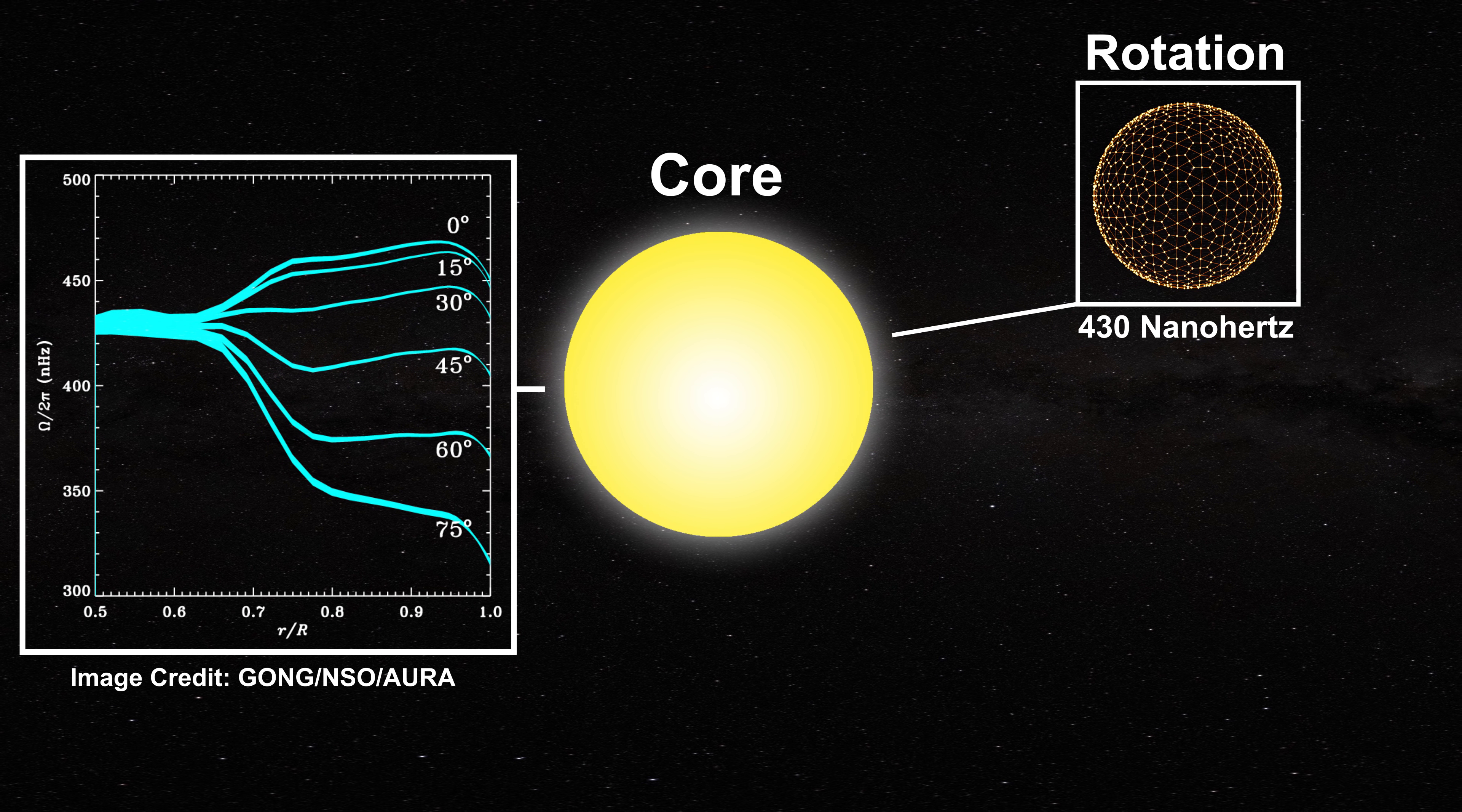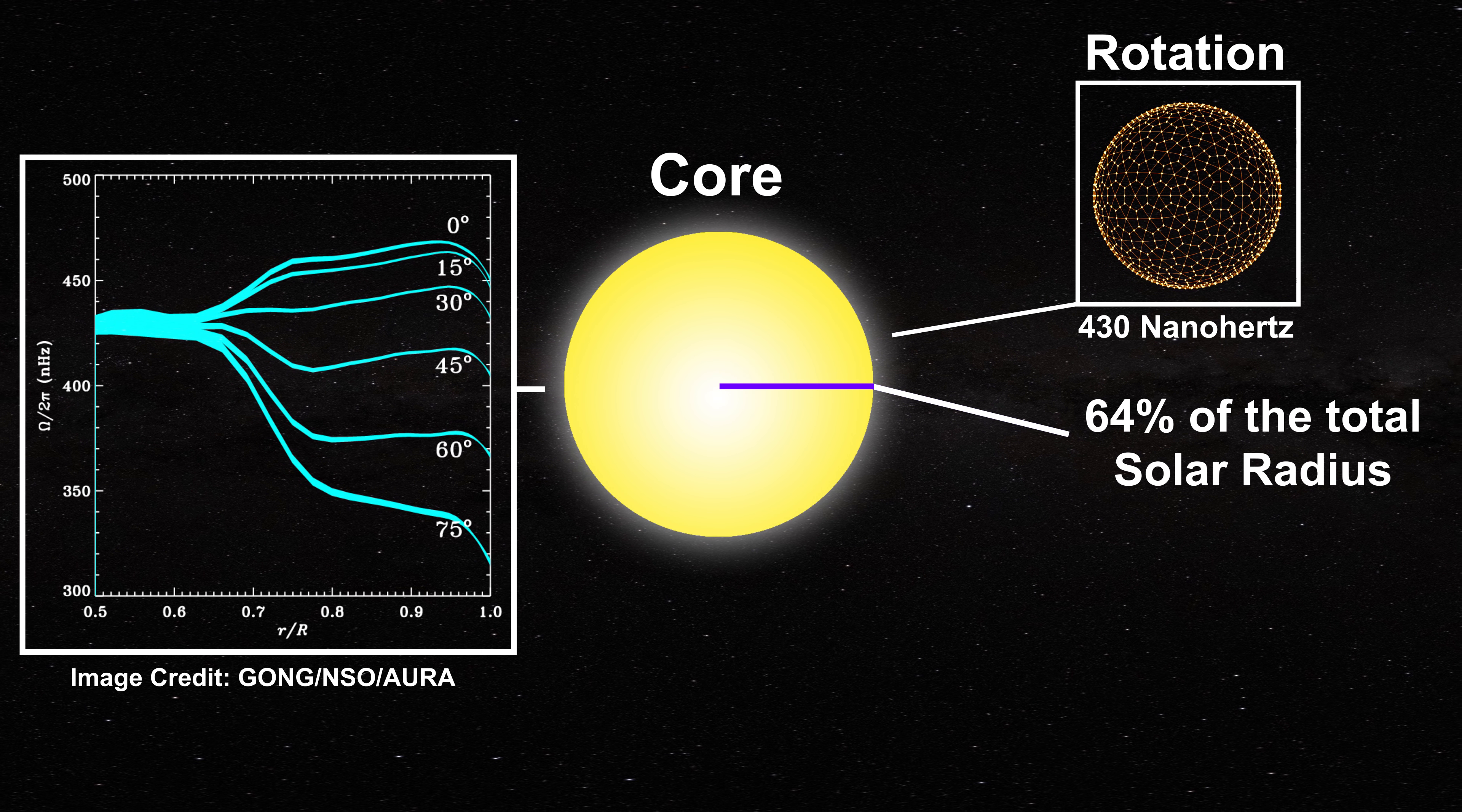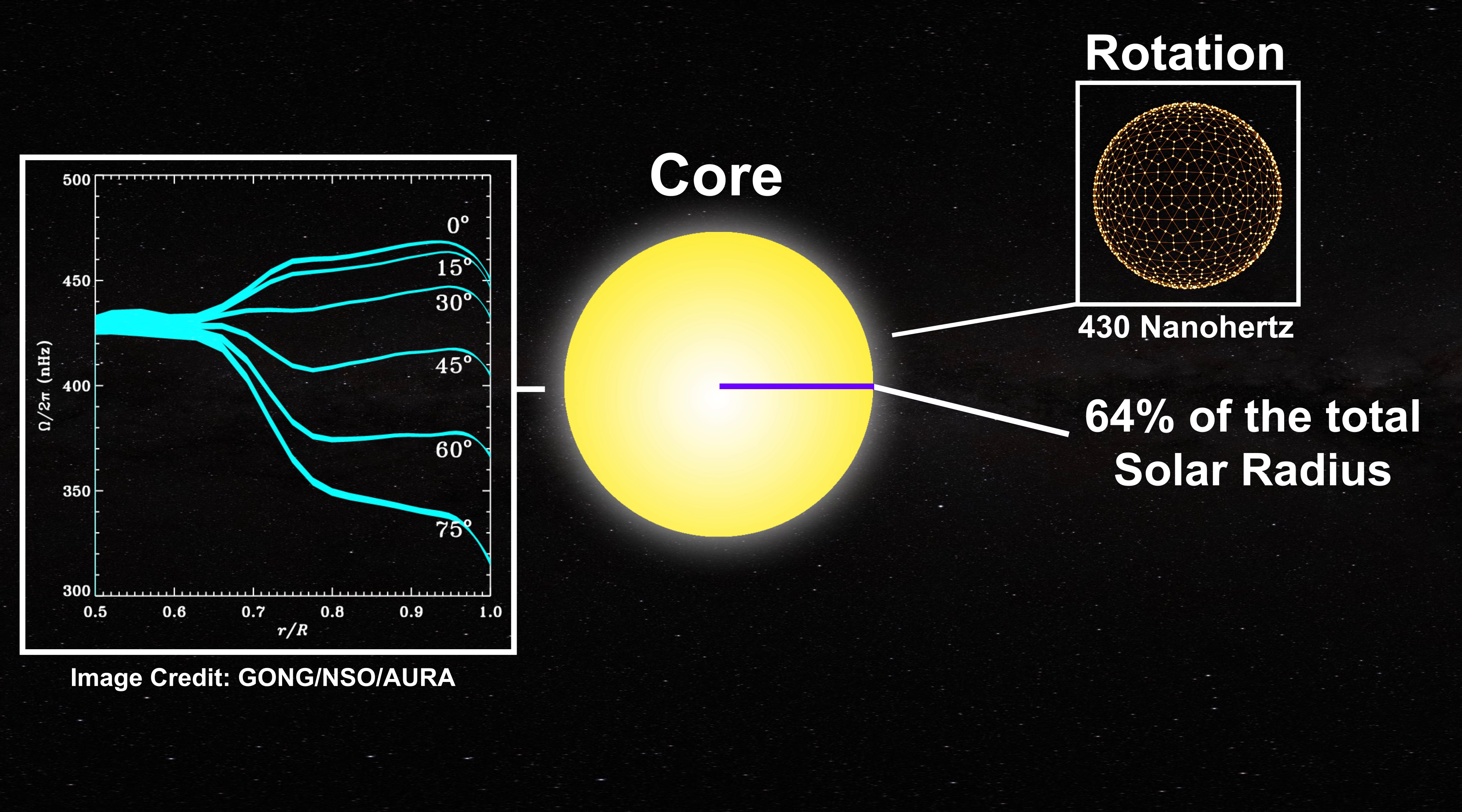Note in the liquid metallic hydrogen model that the core constitutes a substantial portion of the inner Sun extending from about 0.64 solar radii. This larger core matches helioseismic measurements.